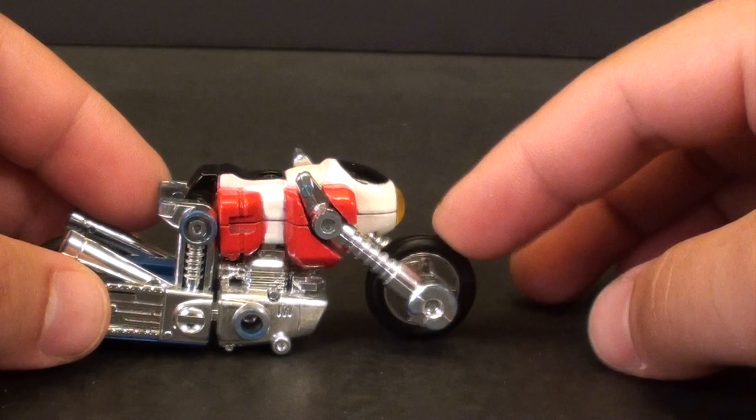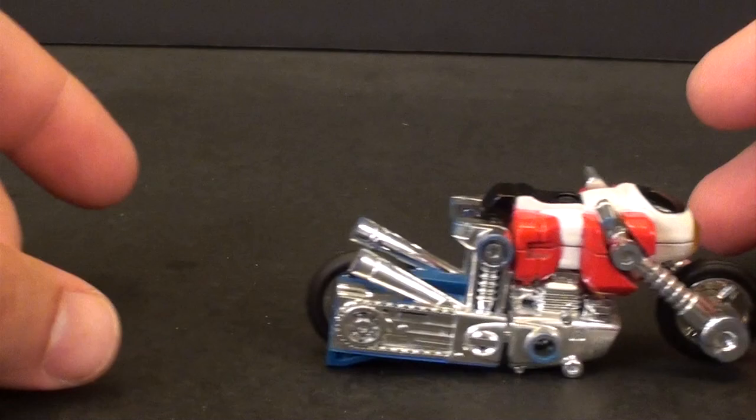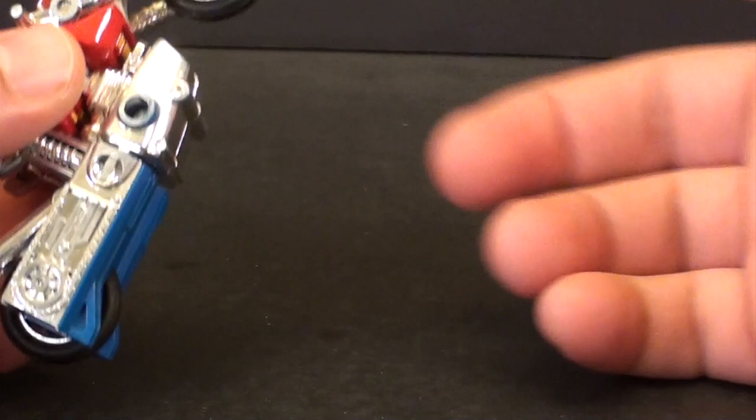This is his motorcycle mode, not a whole bunch to say here. He does have nice rubber tires which have still held up considering the age, and he does roll like a champ. Now you do have this little part of the engine that keeps him from tipping over here.